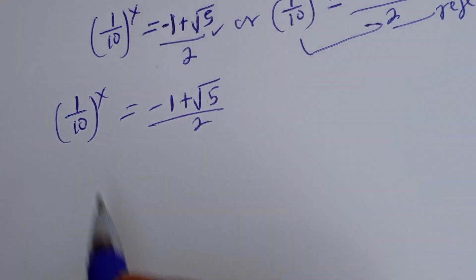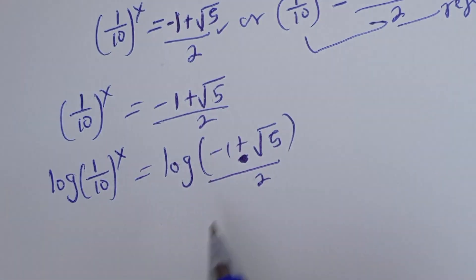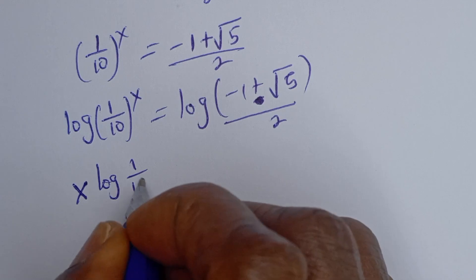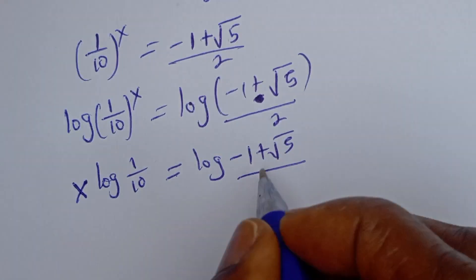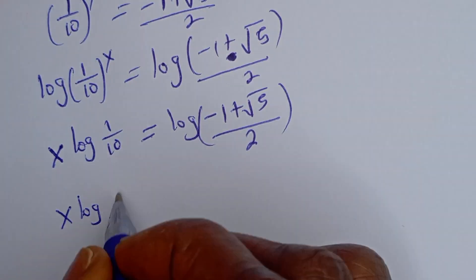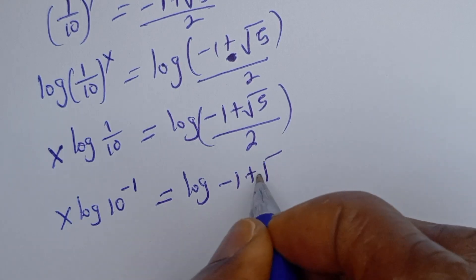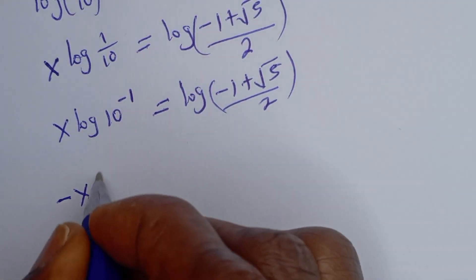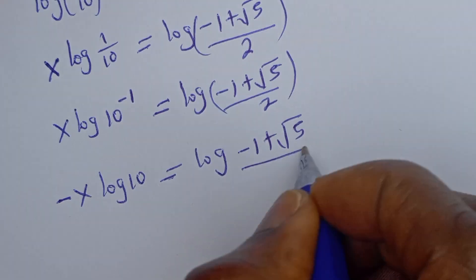Therefore, from 1 over 10 to the power of S equals minus 1 plus root 5 over 2, let's take the log of both sides. We have log of (1 over 10 to the power of S) equals log of (minus 1 plus root 5 over 2). This can be written as S times log of 10 to the power of minus 1, equals log of (minus 1 plus root 5 over 2).